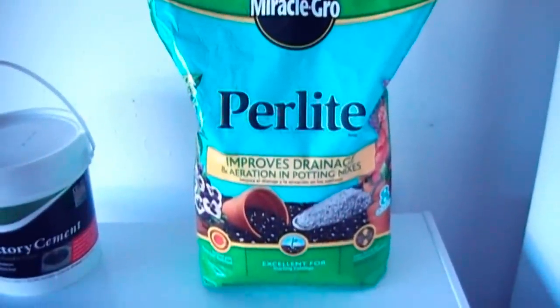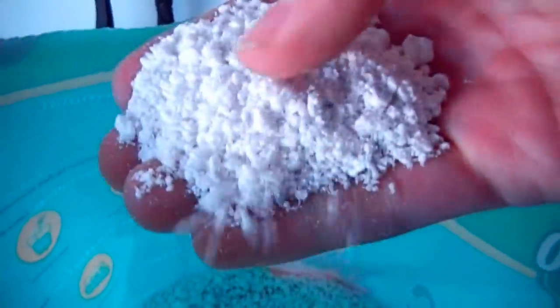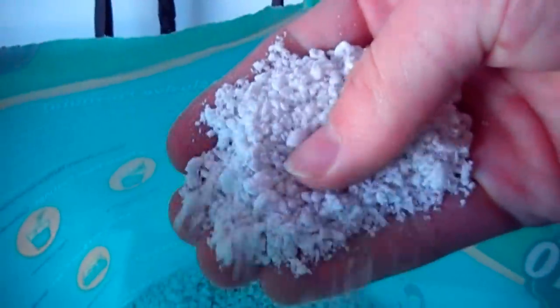This is perlite. It's a very interesting material. It's an expanded rock. It has a consistency of styrofoam. It's very insulating.